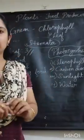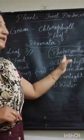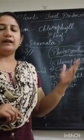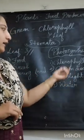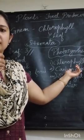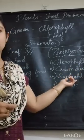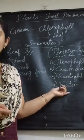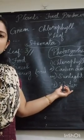Chlorophyll is the green pigment present in the leaf. Plants get carbon dioxide from the air or the atmosphere — what we breathe out is carbon dioxide. Sunlight comes from the sun. And water is received by the plants from the soil through their roots.